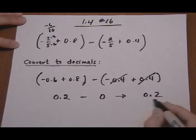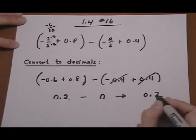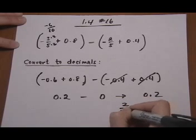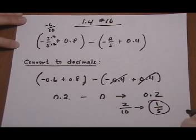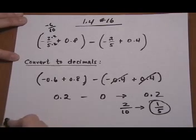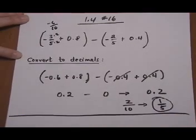And as a fraction, 0.2 is the same as 2 tenths, and 2 tenths reduces to 1 fifth. All right, that's doing it, converting to decimals.